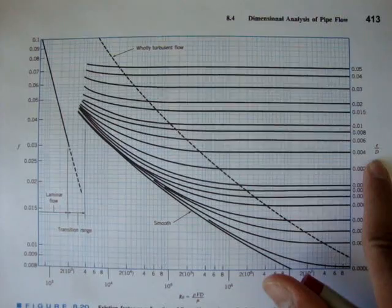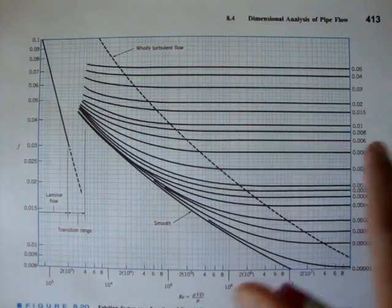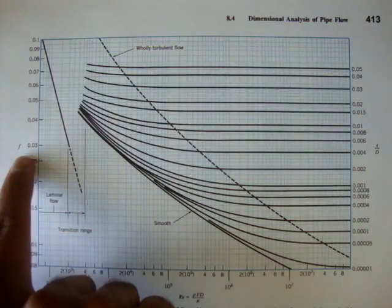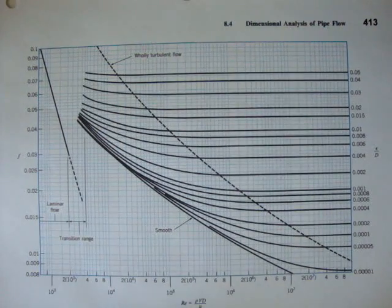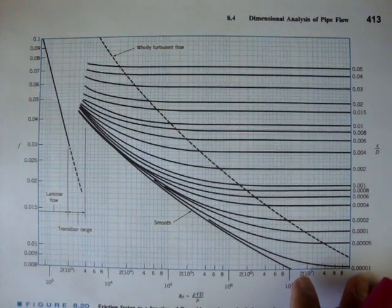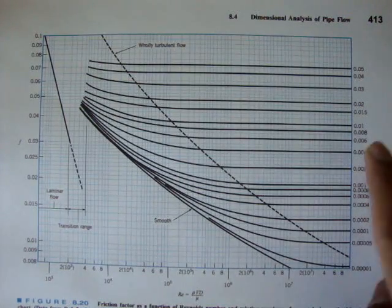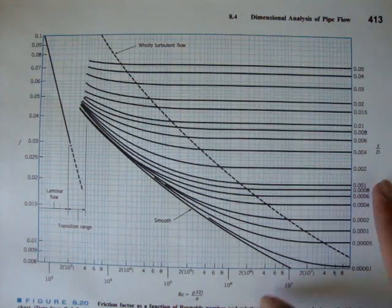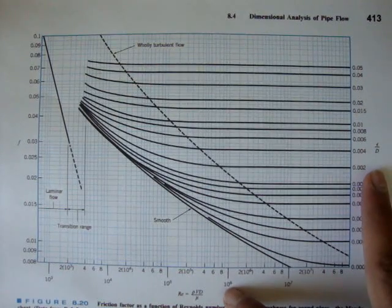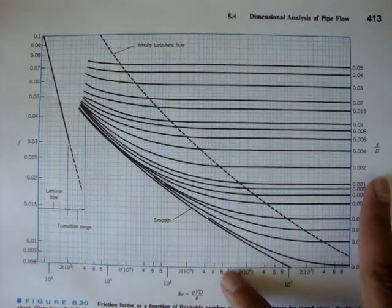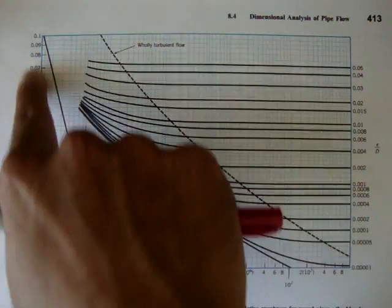So if you have your Reynolds number, you have your roughness coefficient. And then here on the left, you have your frictional factor. And usually, we either know the roughness coefficient and the Reynolds number, or we have to calculate those two values. And we use those two values to estimate the frictional factor.